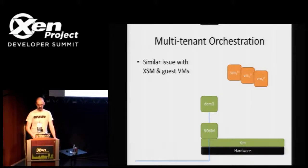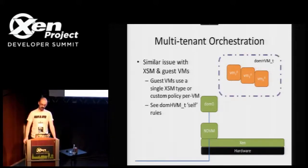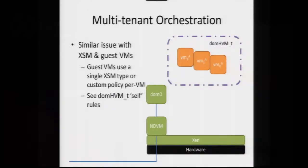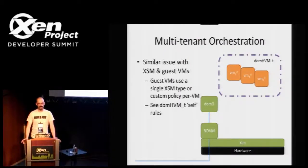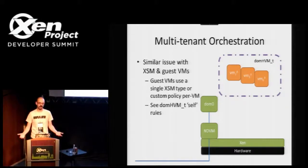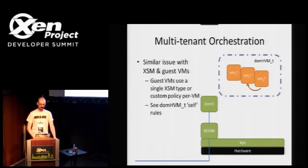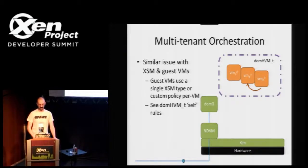In this multi-tenant orchestration scenario, a management action comes in over the wire telling Dom0 to do something — usually a user asking the tool stack to spin up some VMs. It spins up three of them. In a good cloud, it puts them into the same security context. For a lot of organizations this wouldn't be a problem — say they're all in the same domain. But this allows for the possibility of one virtual machine affecting another since they're in the same context. You can look at the existing upstream Flask policy for the HVM domain type and the self rules to see everything a VM in that type can do to itself or any other VM running in that context.